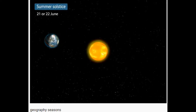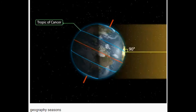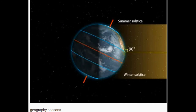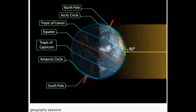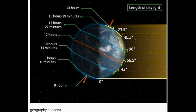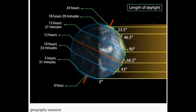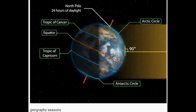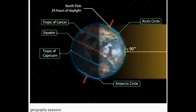Summer solstice occurs on the 21st or 22nd of June. The overhead sun is over the Tropic of Cancer, which receives the largest amount of solar radiation. The northern hemisphere is in the summer solstice while the southern hemisphere is in the winter solstice. The angle of the sun decreases towards the poles. On this day, the length of daytime in the northern hemisphere is the longest of the year, while that of the southern hemisphere is the shortest. There are 24 hours of daylight at the Arctic Circle and 24 hours of darkness at the Antarctic Circle.